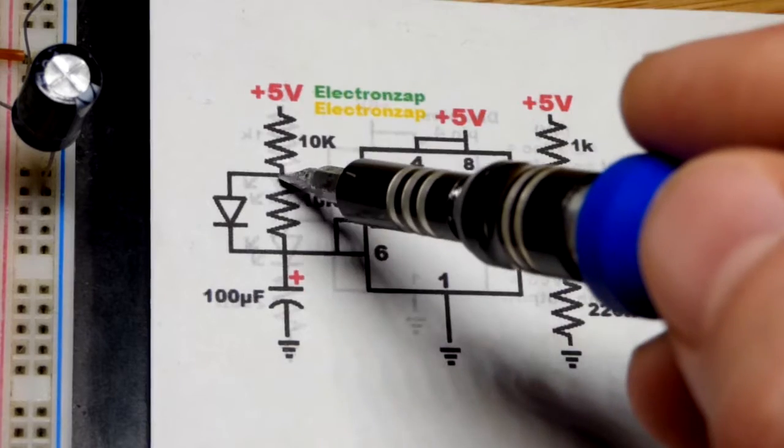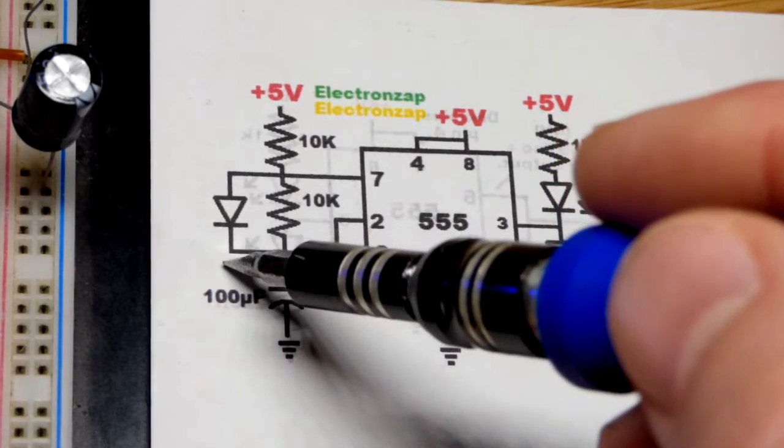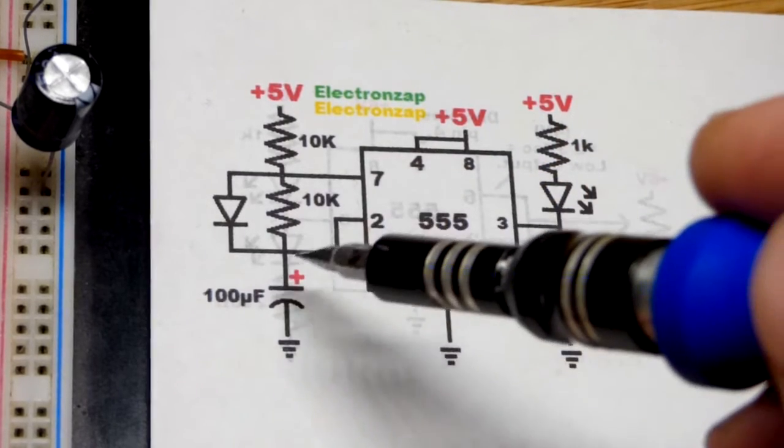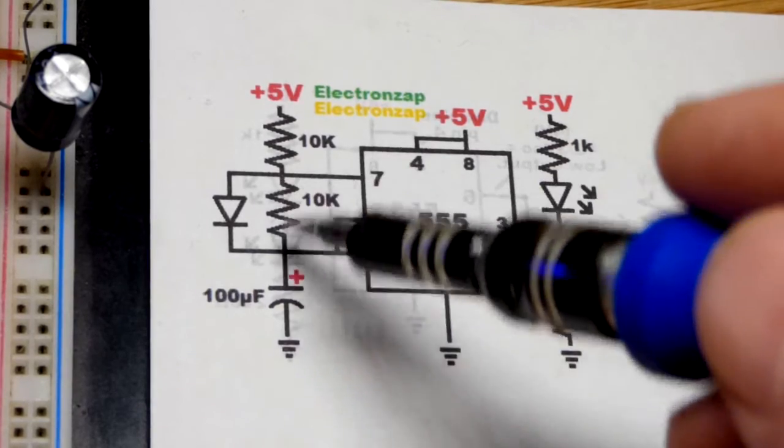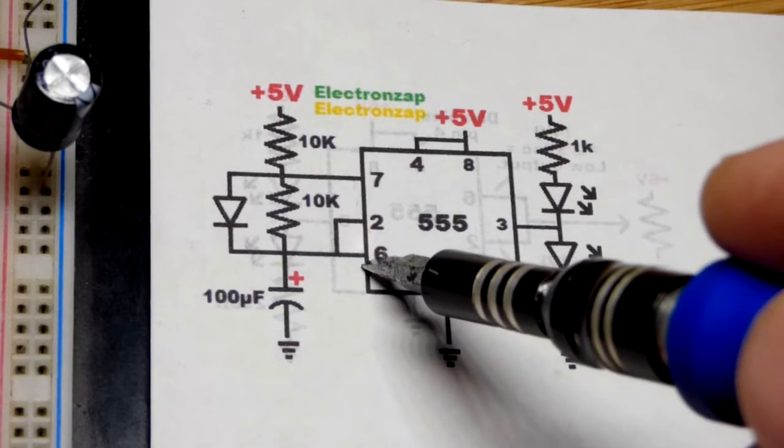It charges through a 10k resistor and a diode. If you have the diode, otherwise it also has to go through that other resistor, which will take longer.